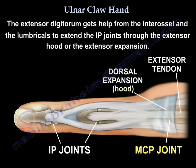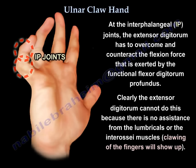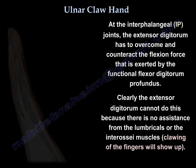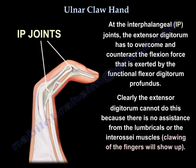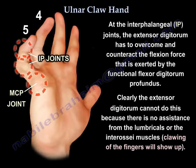The extensor digitorum gets help from the interossei and the lumbricals to extend the IP joints through the extensor hood or extensor expansion. At the interphalangeal joints, the extensor digitorum has to overcome the flexion force exerted by the functional flexor digitorum profundus, and clearly it cannot do this because there is no assistance from the lumbricals or the interossei.